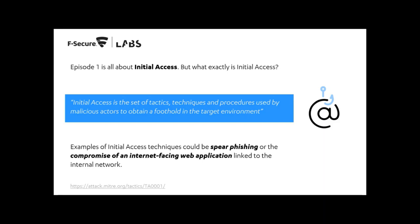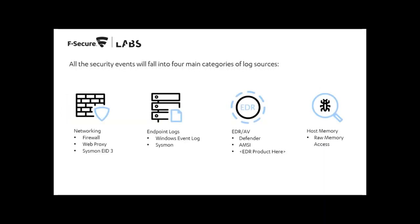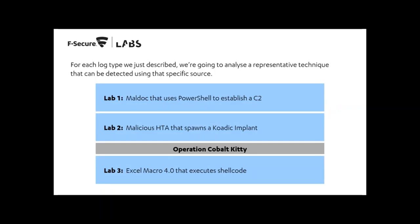We're focusing on maldocs — techniques attackers use to send office documents or executables into your environment hoping an employee will click on them to obtain a foothold. Everything we're going to show falls into one of four categories: network events, endpoint logs (with Sysmon in play), EDR capabilities, and host memory — the last lab involves memory forensics. The first lab is a very simple PowerShell one-liner embedded in an Excel spreadsheet, using a VBA macro to execute it, pulling down a staged payload using Covenant — our first open source C2 post-exploitation framework.